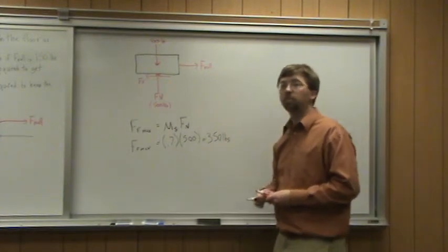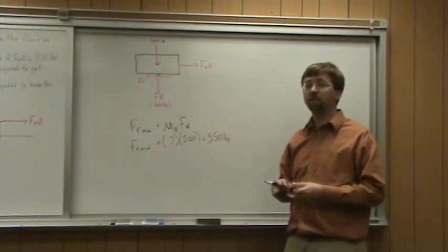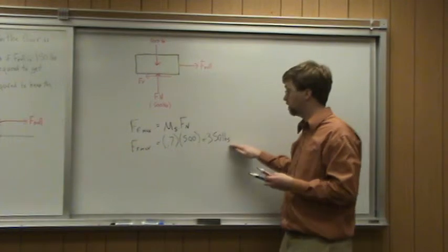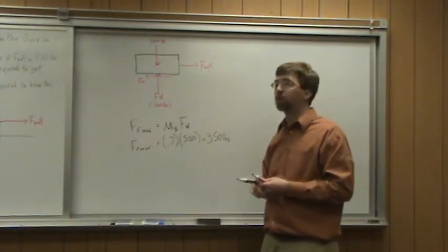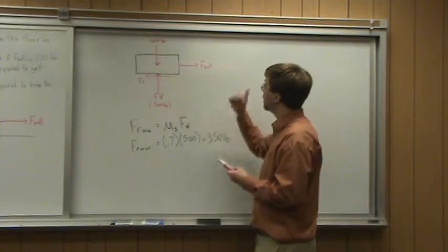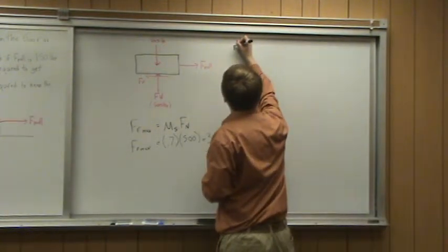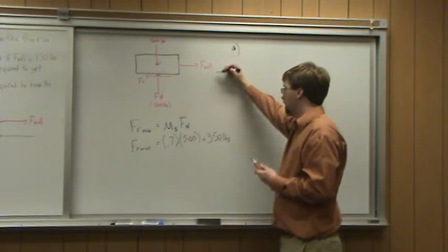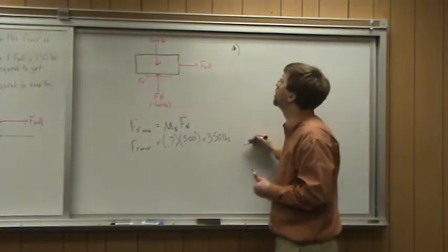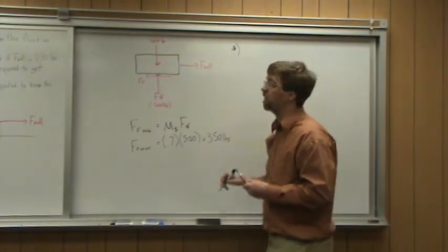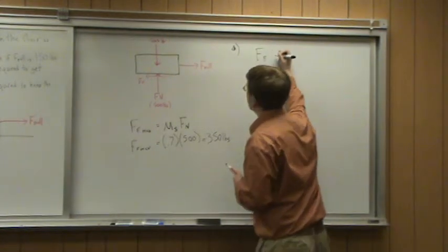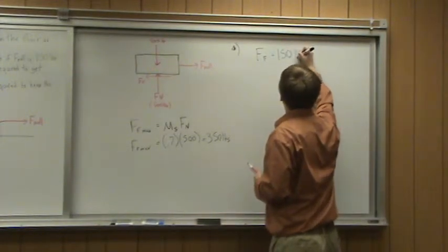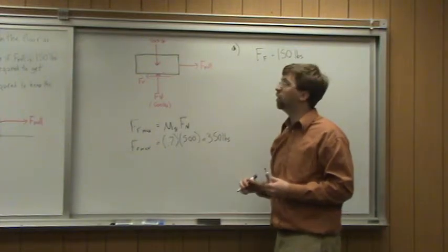That's the maximum friction force before the box starts sliding. Before that point, the box is not going to be sliding. If I pull on it, the friction doesn't instantly jump up to 350 pounds — it's going to match the pulling force until that point. So for part A, if the pulling force is 150 pounds and the maximum friction force is 350 pounds, the friction force FF is just going to be equal and opposite to the pulling force: 150 pounds, exactly enough to keep the body from moving at all.